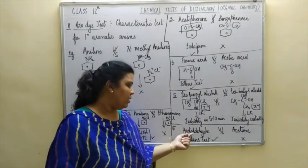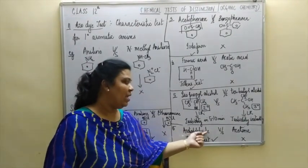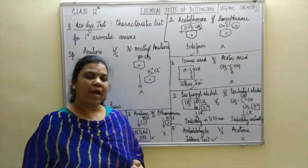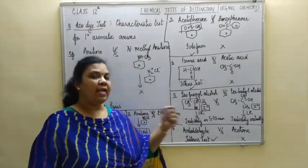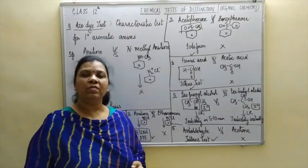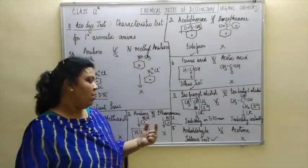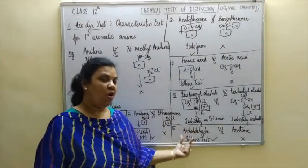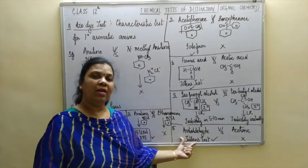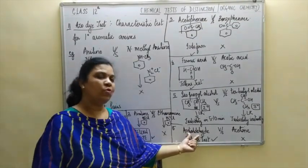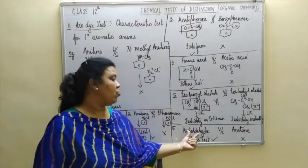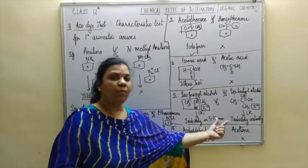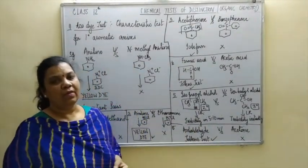The next pair is acetaldehyde versus acetone. Acetaldehyde belongs to the aldehyde homologous series, and acetone belongs to the ketone homologous series. So we can apply the Tollen's test — the silver mirror test. When you add Tollen's reagent to acetaldehyde, you will get a shiny silver mirror, but acetone being a ketone will not give this observation.